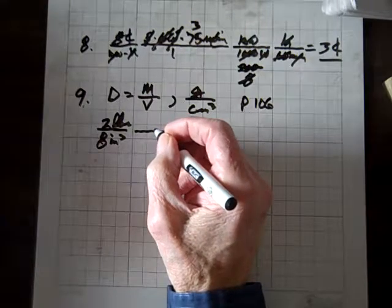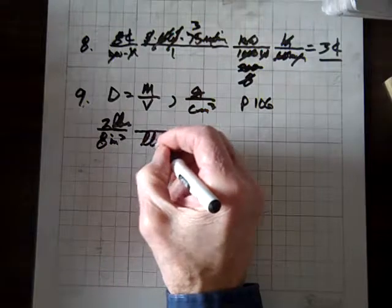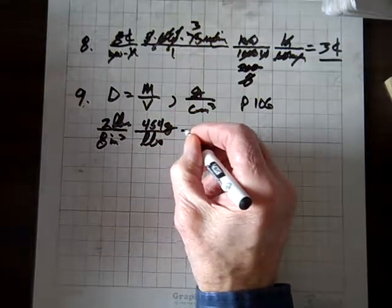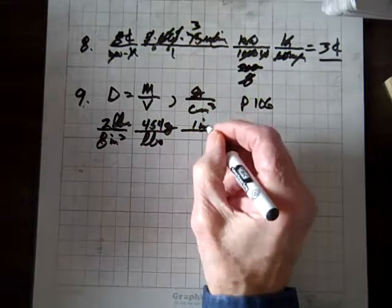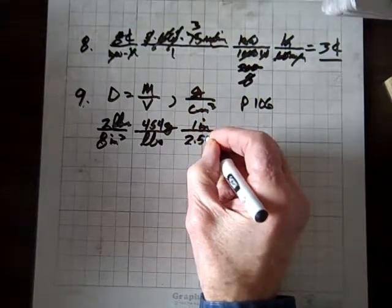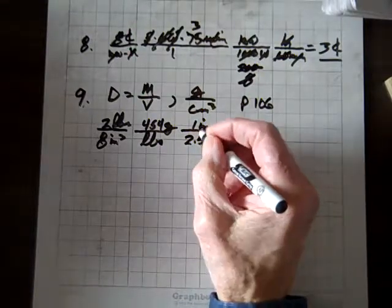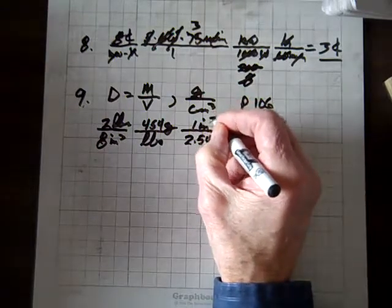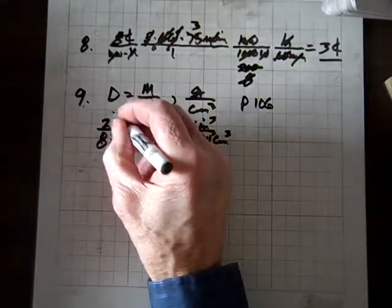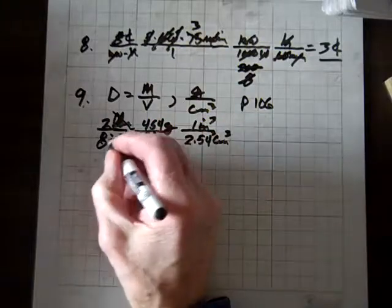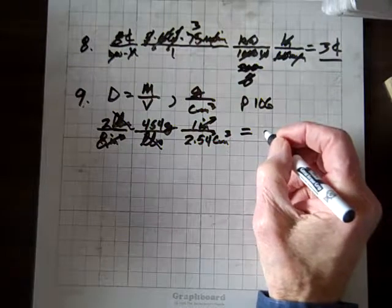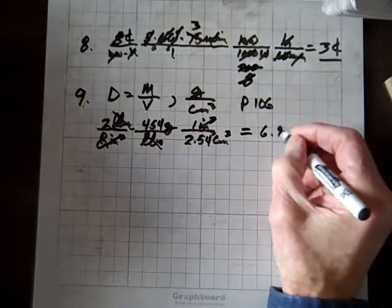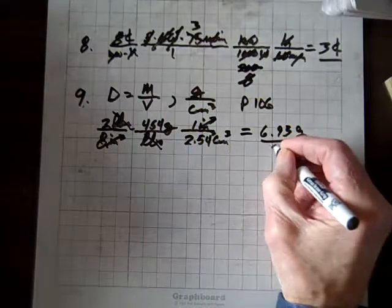Now let's convert the pounds to grams. In one pound there's 454 grams, and in one inch there's 2.54 centimeters. We need cubic inches and cubic centimeters, so we'll cube everything—cube the 2.54, cube the inches. The pounds divide out, the cubic inches divide out. When we run this through the calculator, we get 6.9, and it rounds up to 3, grams per cubic centimeter.